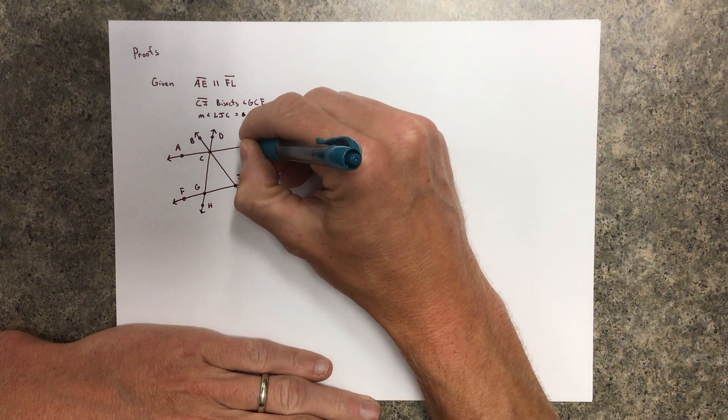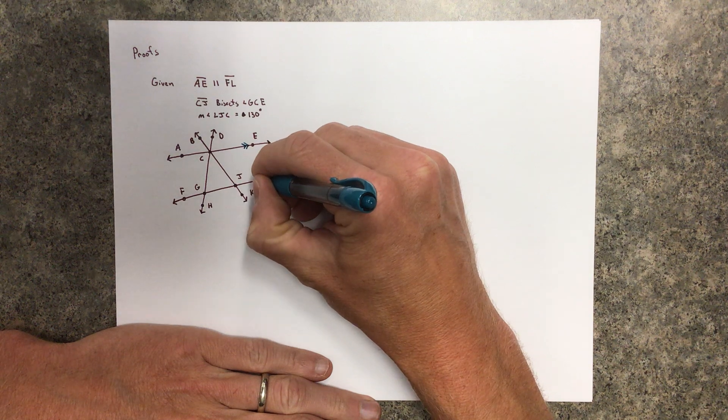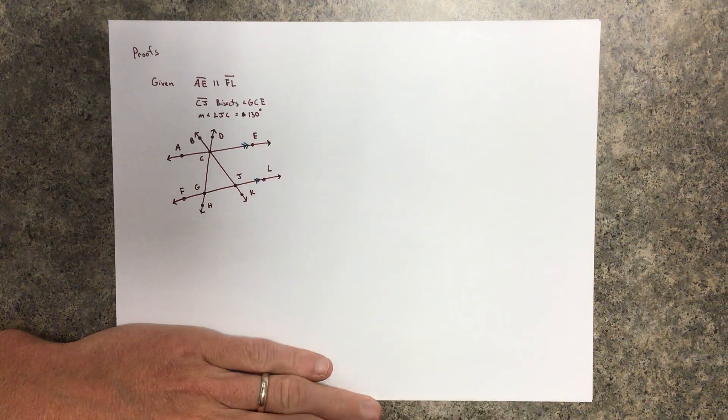We might even just put in double arrows there to tell us that those things are parallel.